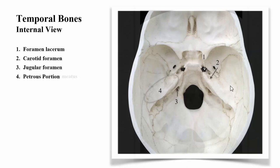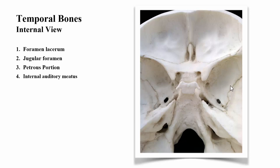Zooming in slightly, we can see again the foramen lacerum, the jugular foramen, and the petrous portion of the temporal bone. We also have, in addition to the external auditory meatus, an internal auditory meatus — difficult to see on this skull, but it's right there on both sides.